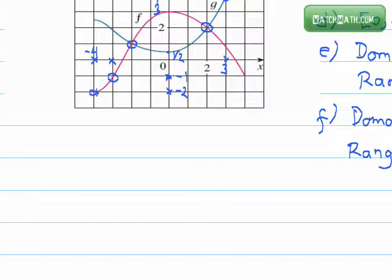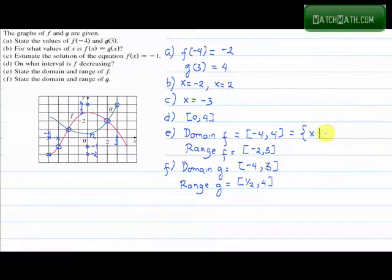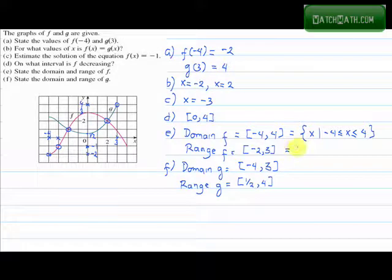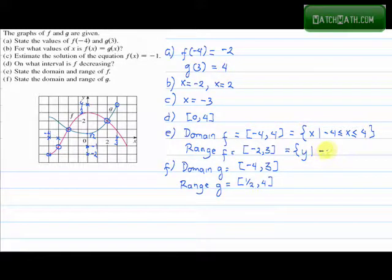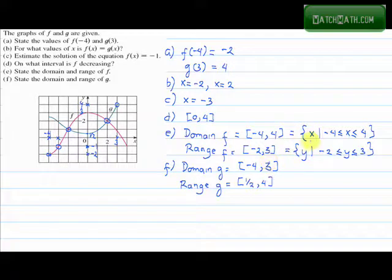Sometimes for the domain and range we use different variables. In set notation, the domain of f is all x such that x is between negative 4 and 4. For the range, we use the variable y: all y such that y is between negative 2 and 3. We can write similar set notation for the domain and range of g.